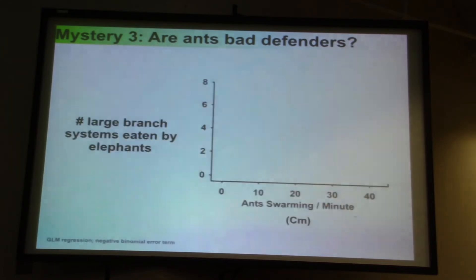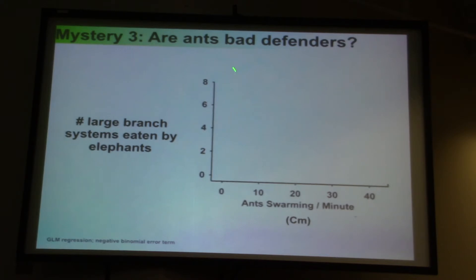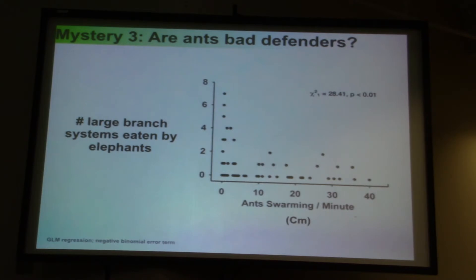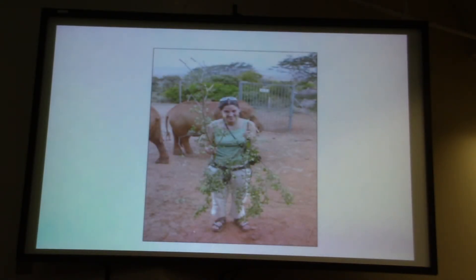It almost seems impossible to believe, but we had to do the experiment. We manipulated the density of ants on plants and looked at the number of large branch systems trashed by elephants over just an 18-month period — and found, sure enough, a negative relationship: the more ants you have on a plant, the less likely elephants are to start chowing down on that tree. I still wasn't convinced. One obvious alternative interpretation is that acacia drepanolobium just doesn't taste good to elephants — maybe it doesn't have the right nutrient ratios, so perhaps they're avoiding it for palatability reasons.